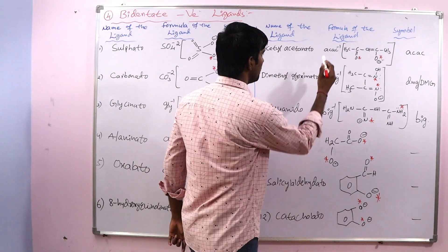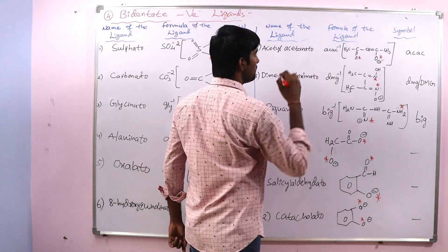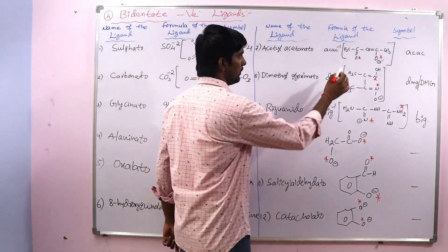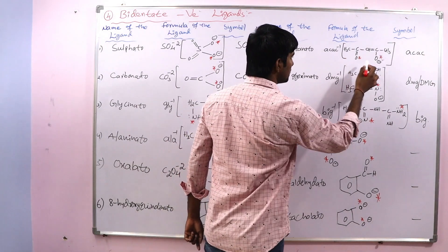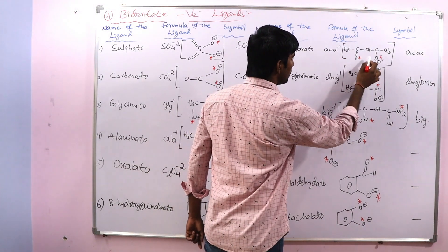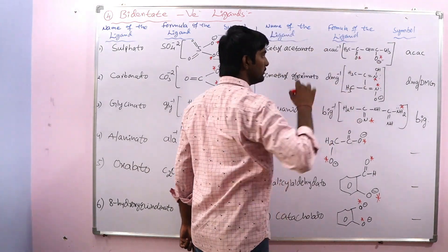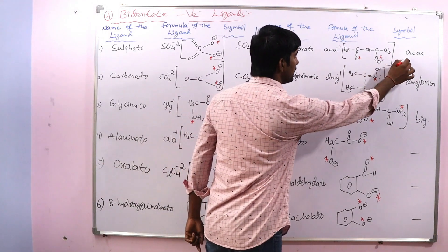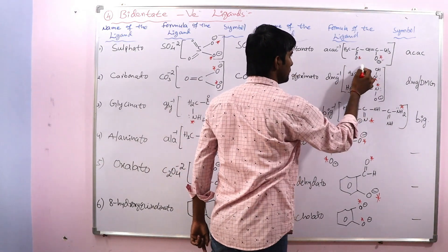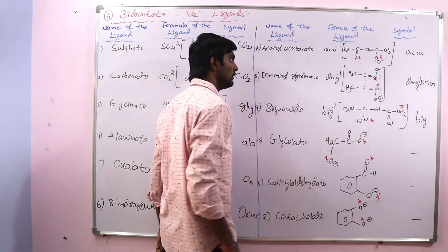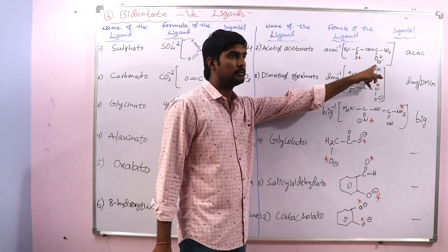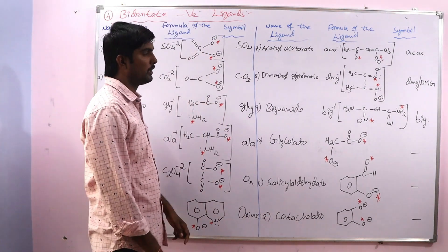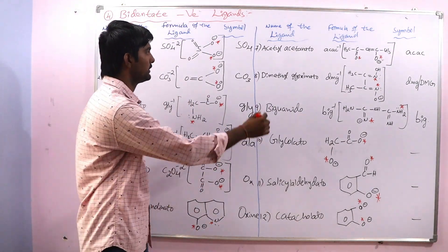Next is acetyl acetato, Ac-ac⁻¹. Here two oxygen atoms are the donor atoms and the symbol is ac-ac. Since both donor atoms are the same, it is a symmetrical bidentate ligand.